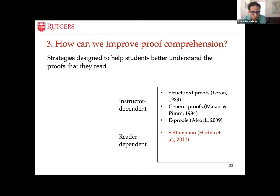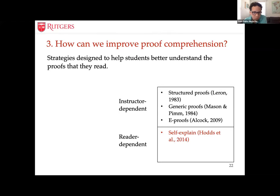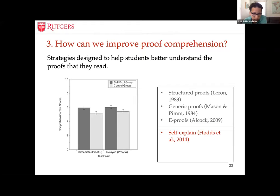The self-explanation literature started with researchers noticing that good readers did this naturally — they self-explained more than those who didn't comprehend the text as well — and researchers wondered whether this could be taught. The answer was yes, with very robust results in educational psychology. Mark Houghton and colleagues wanted to see if something similar could be found specifically when reading mathematical proofs. They conducted three studies testing the effectiveness of self-explanation training with math undergraduates, and they did find that it improved proof comprehension.